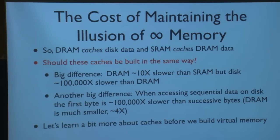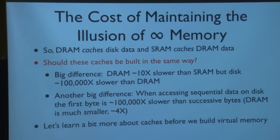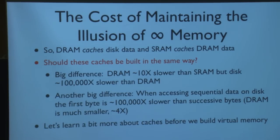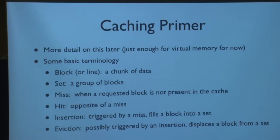The big difference we touched on was latency: DRAM is typically 10 times slower than SRAM, but disk can be on the order of a hundred thousand times slower than DRAM. Another big difference: when accessing sequential data on disk, because you have to mechanically move the head, the first byte might be a hundred thousand times slower than successive accesses — compare this to about four times difference for accessing the first element versus successive ones in DRAM. Virtual memory is really based on the concept of caching, so we should understand how caches work.